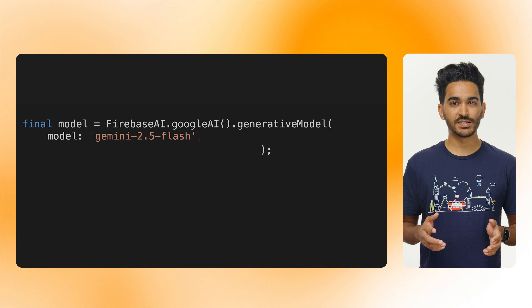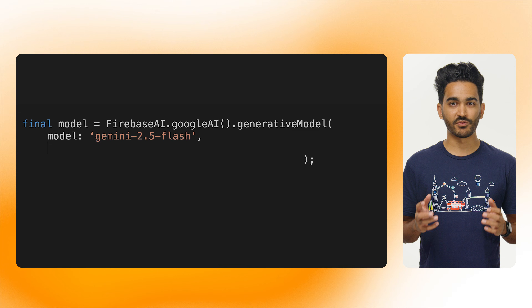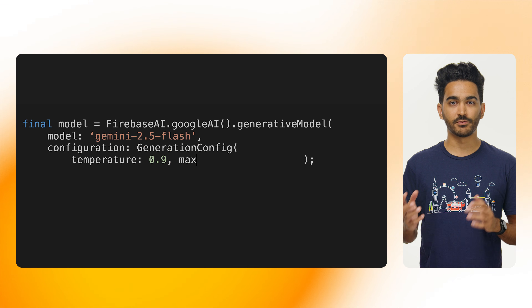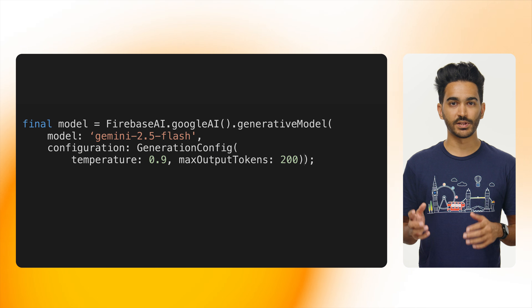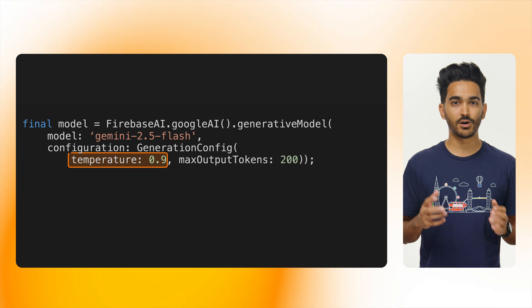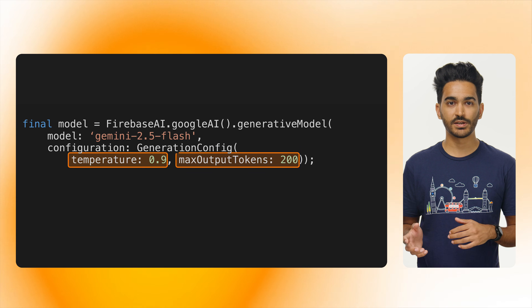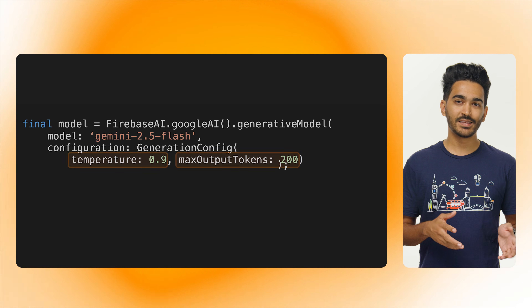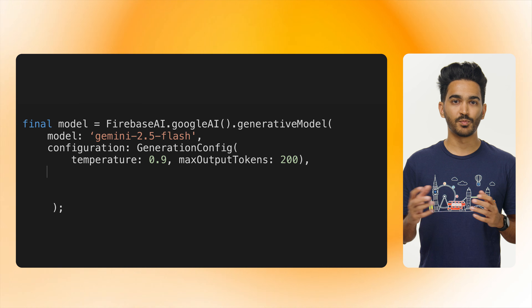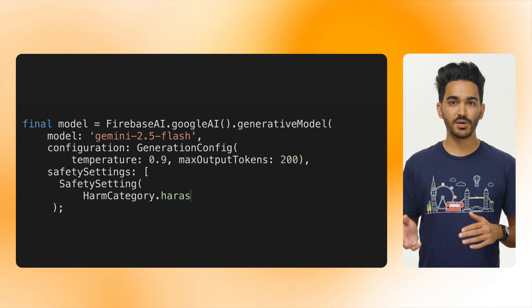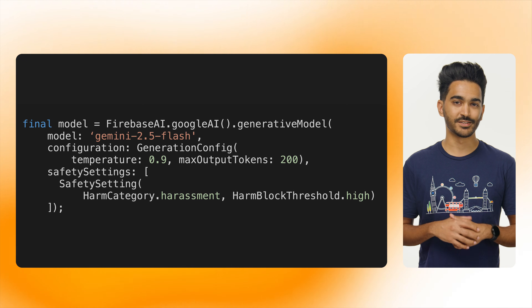Optionally, you can customize the generation by providing a generation config object for things like temperature or max output tokens, and safety settings to block content that may be considered unsafe.